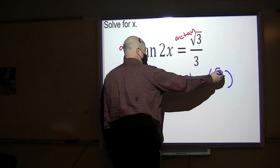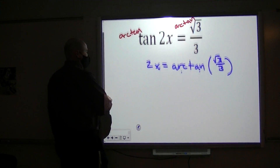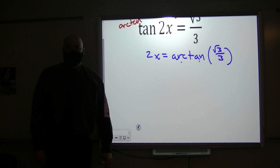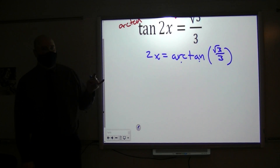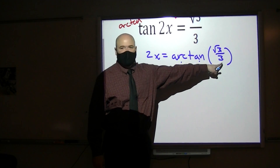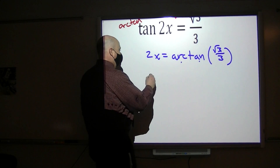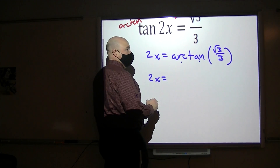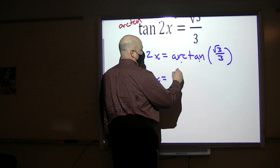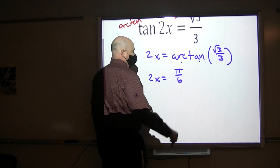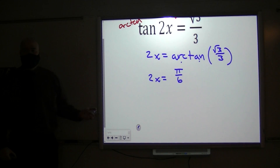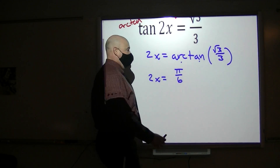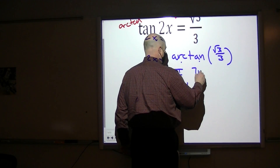What pi value has a tangent value of radical 3 over 3? It has to be the pi over 6 angles, because there's two 3s. So 2x is equal to pi over 6, where tangent is positive in quadrant 1, and in quadrant 3 it would be 7pi over 6.